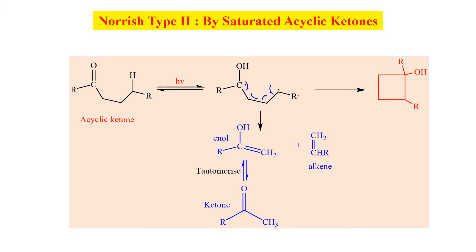At first, this hydrogen is shifted to the oxygen and it becomes a hydroxyl group, with one electron here and another here. Then this bond is broken down and an enol is formed which is tautomerized to the keto form, and the second portion becomes an alkene. The second option is that this 1,4-biradical is cyclized to form a cyclobutanol.